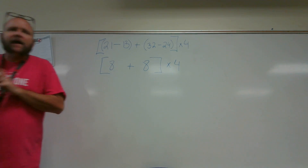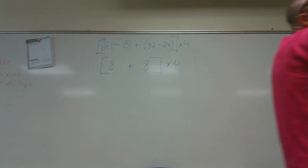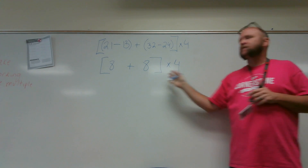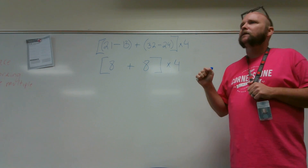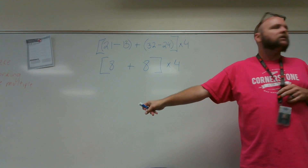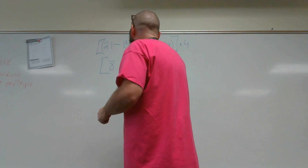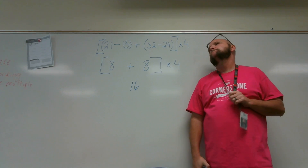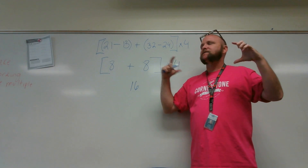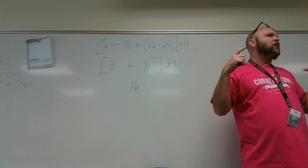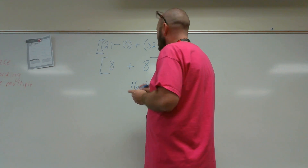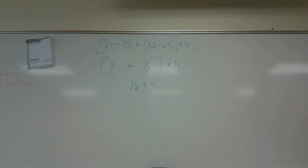We multiply that by 4. Think about what we do next. David — good. I add the two 8s together to get the sum, and David was right, of 16. Why do I do that before I multiply? Because it's in the brackets — not just because it shows up first in the problem, but because it's in the brackets. We always do the grouping symbols first. So we have 16 multiplied by 4. We need to find the product of 16 and 4.